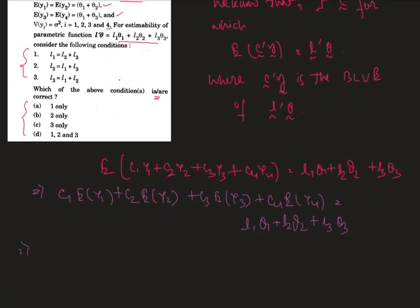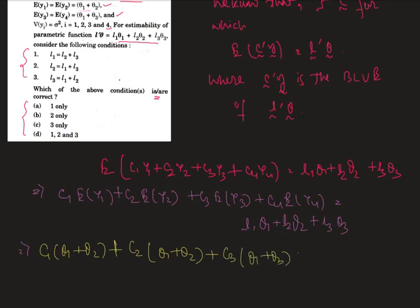Now, E(y1) = theta1 plus theta2, so we get c1*(theta1 plus theta2). E(y2) is also theta1 plus theta2, giving c2*(theta1 plus theta2). E(y3) is theta1 plus theta2, giving c3*(theta1 plus theta2). And E(y4) is theta1 plus theta3, giving c4*(theta1 plus theta3). This equals l1*theta1 plus l2*theta2 plus l3*theta3.